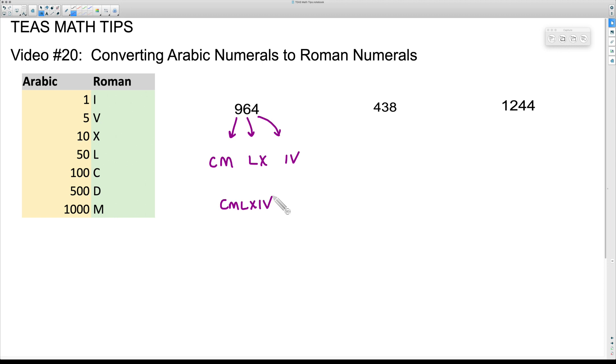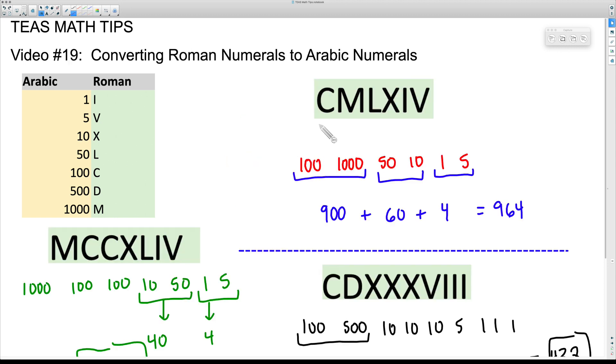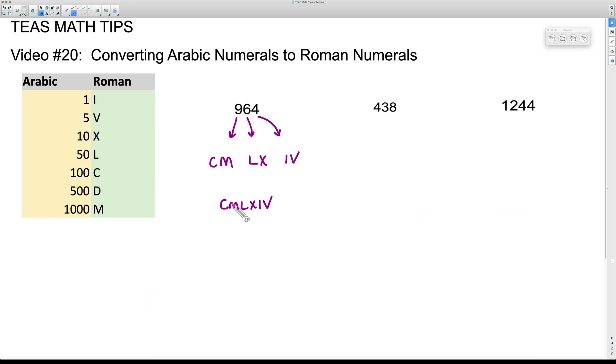If we put all this together, CM LX IV, that is going to be 964 as a Roman numeral. Right here in video number 19, that's what we had originally and we did convert that to Roman numerals. So that is our Roman numeral.